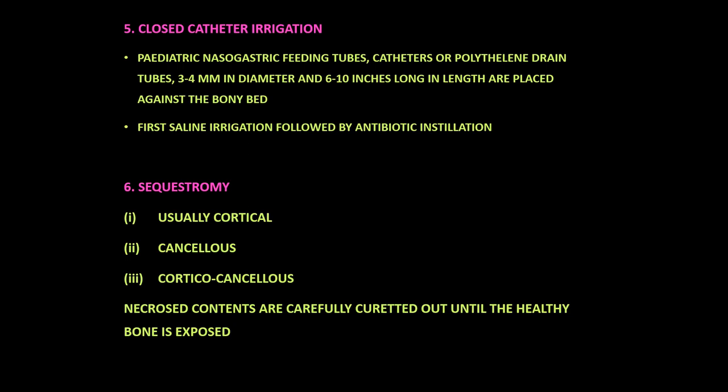After decortication, two small tubes are placed against the bony bed through separate skin incisions and secured with sutures. One tube is connected to low-pressure suction to allow drainage of pus, and the other provides a route through which local antibiotics may be instilled. Daily saline irrigation is performed followed by antibiotic instillation, repeated until negative cultures are obtained. Systemic antibiotics are also continued for at least 2 to 3 months following cessation of clinical evidence of disease.